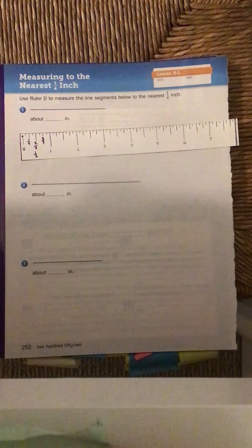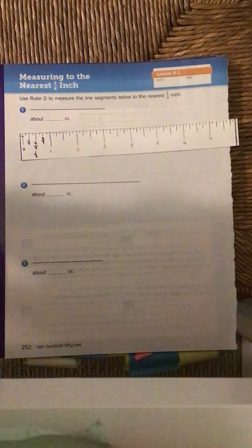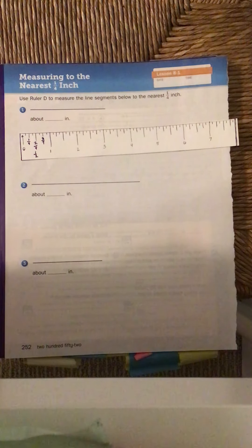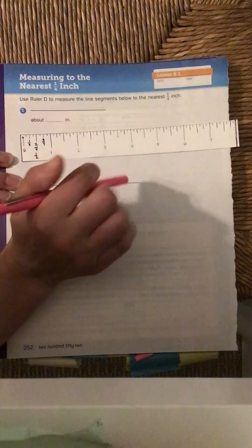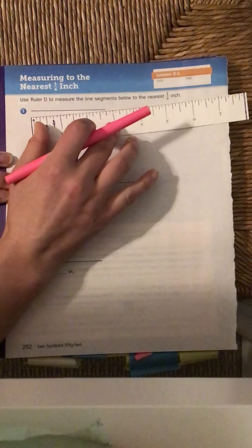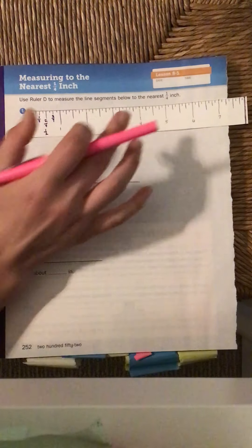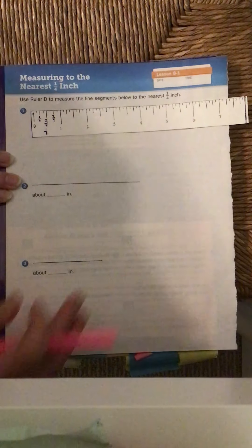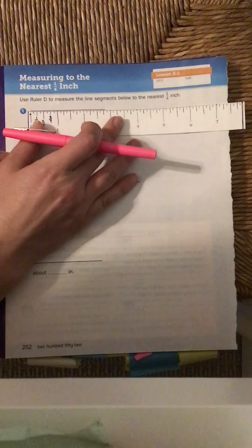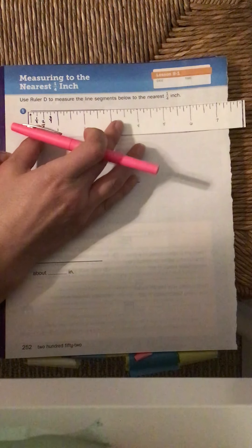What we're going to do is use this ruler to measure the different line segments to the nearest quarter inch. So we're gonna start with 1. Please do this along with me as I do it for you. So to measure a line segment, remember I line it up at 0. I'm not gonna line it up at this very end line because that's not 0. I'm gonna line it up with my arrow. You guys should too. My arrow says 0.